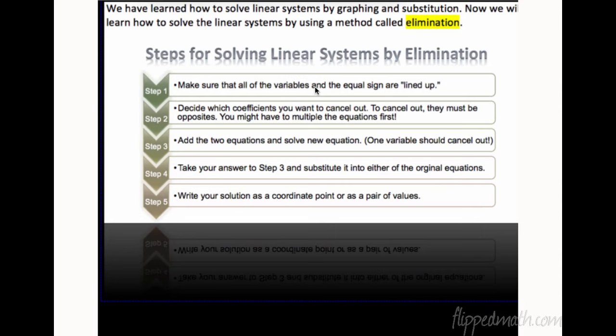Once you do that, you decide which coefficients you want to cancel out. To cancel out, they have to be opposites. So opposites are like negative 2 and positive 2, negative 5 and positive 5, negative x and positive x. Those are opposites, and that's what's going to help us eliminate.